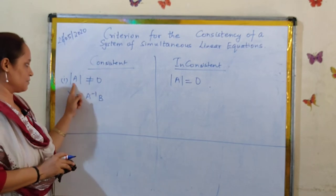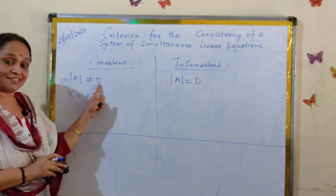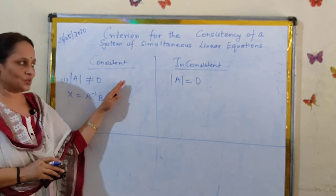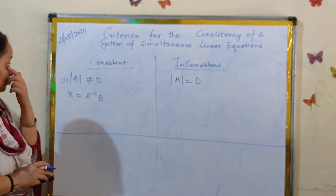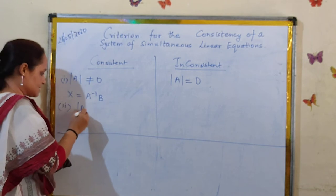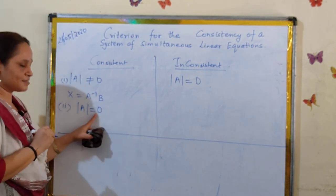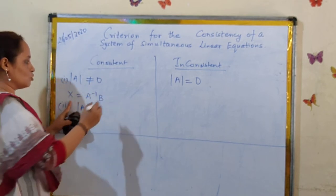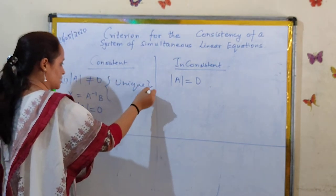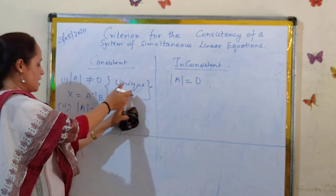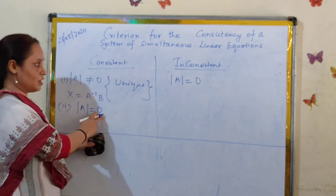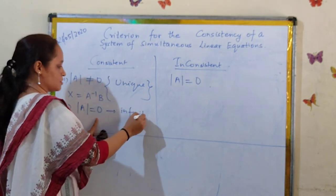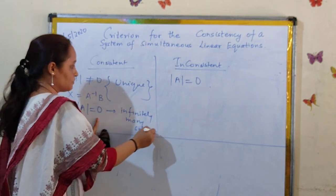The system is consistent if the determinant of matrix A is non-zero, i.e., A is non-singular. In that case, the solution is given by X = A inverse B. This is one case when we say the system is consistent. Sometimes, even when the determinant of A is zero, the system is still consistent. If determinant of A is non-zero, the solution is unique — the system is consistent with a unique solution. And if determinant of A is zero, meaning A is a singular matrix, then the system can also be consistent, and in that case the system has infinitely many solutions.